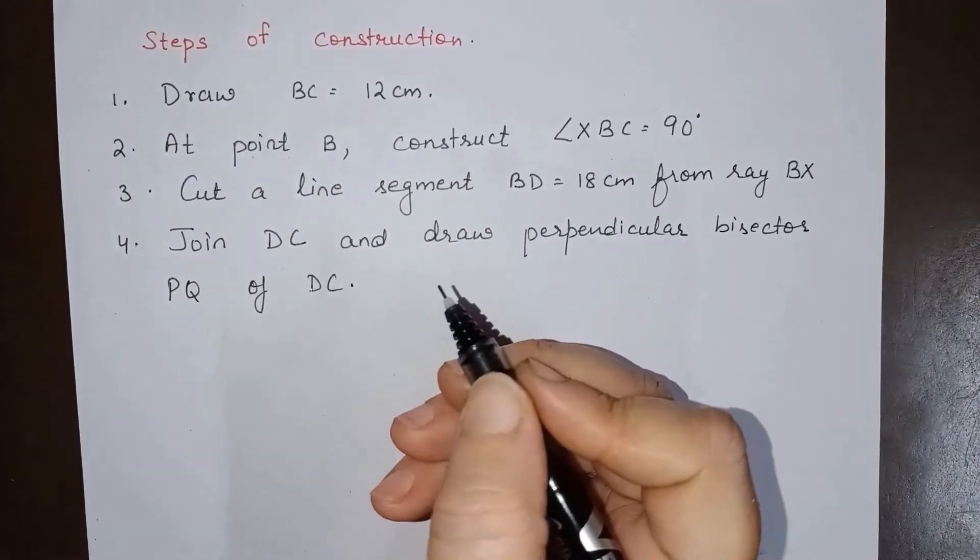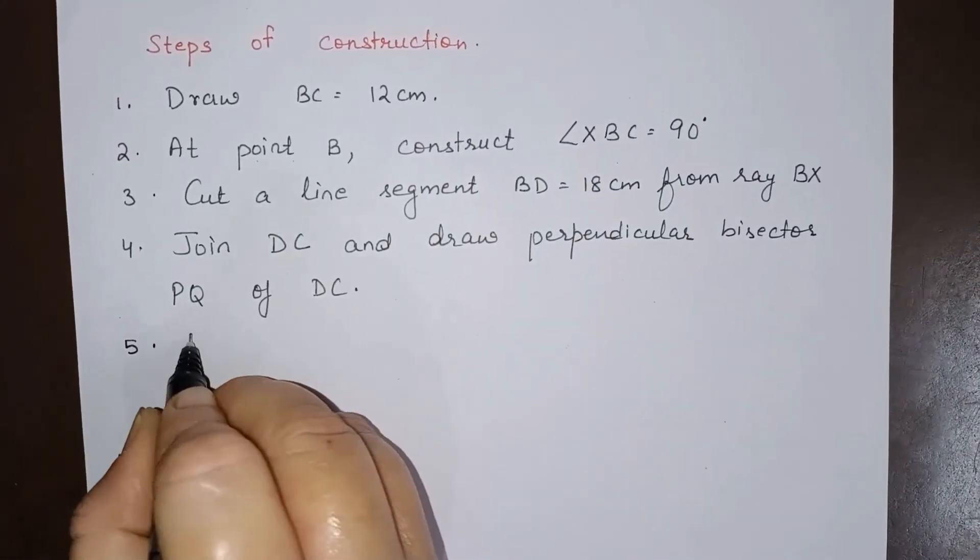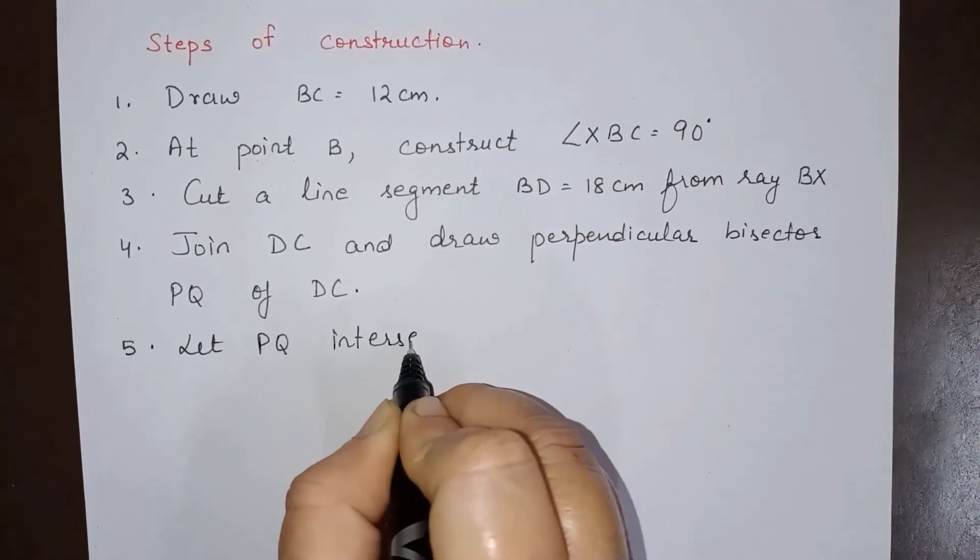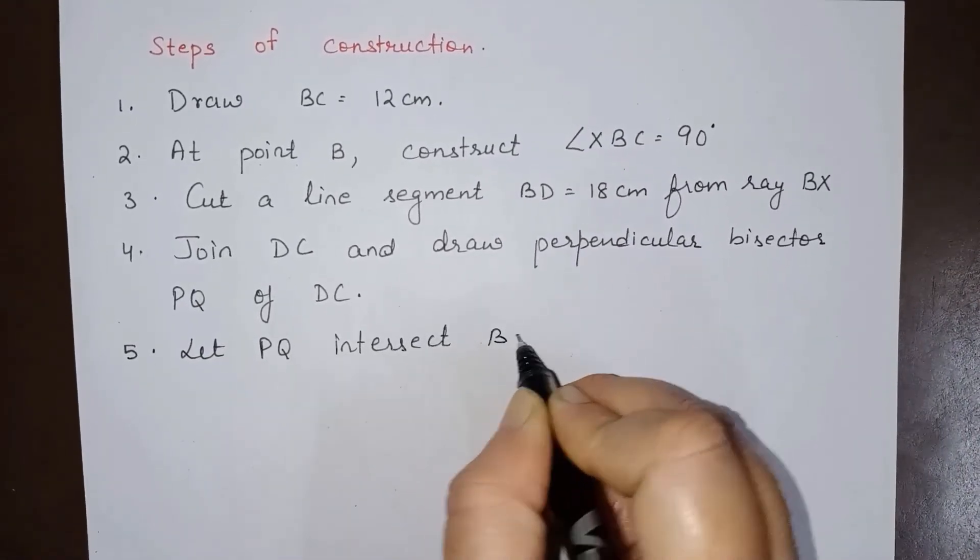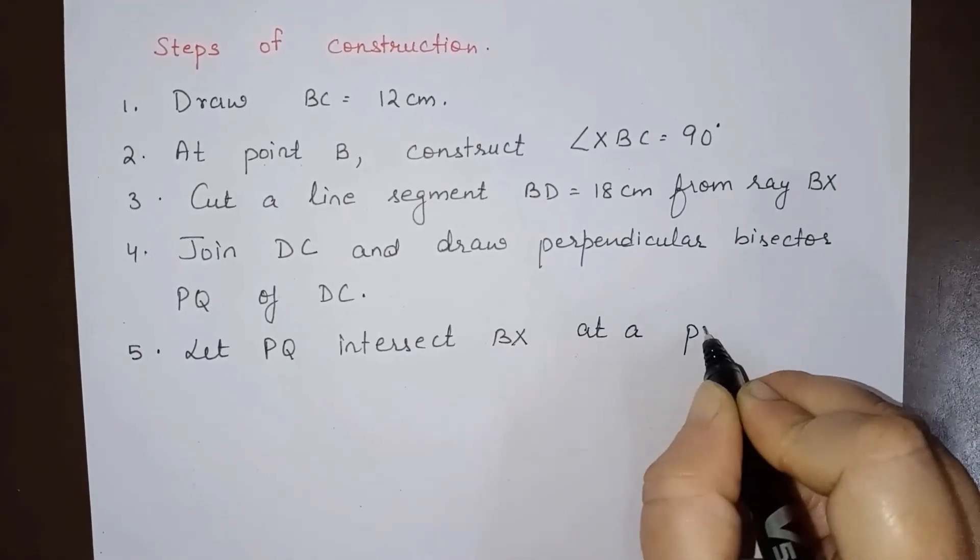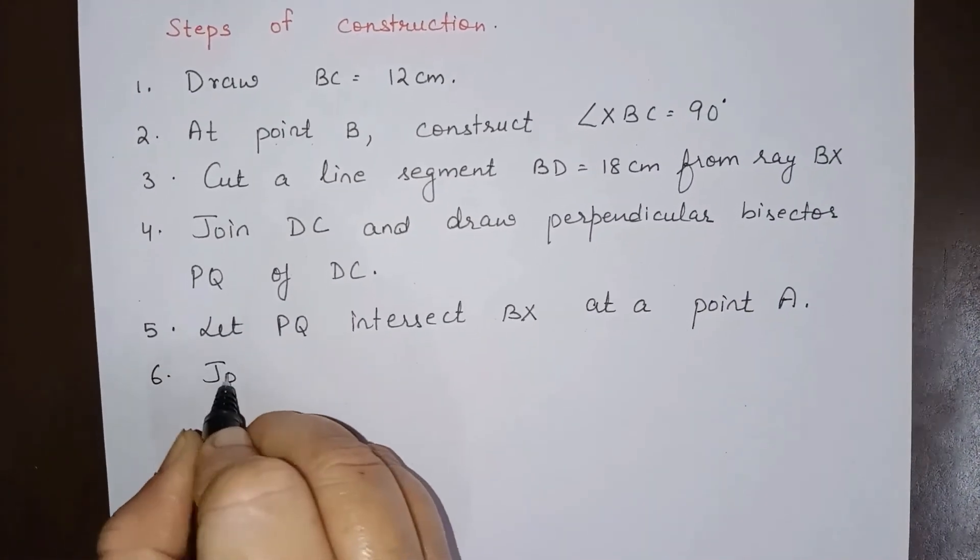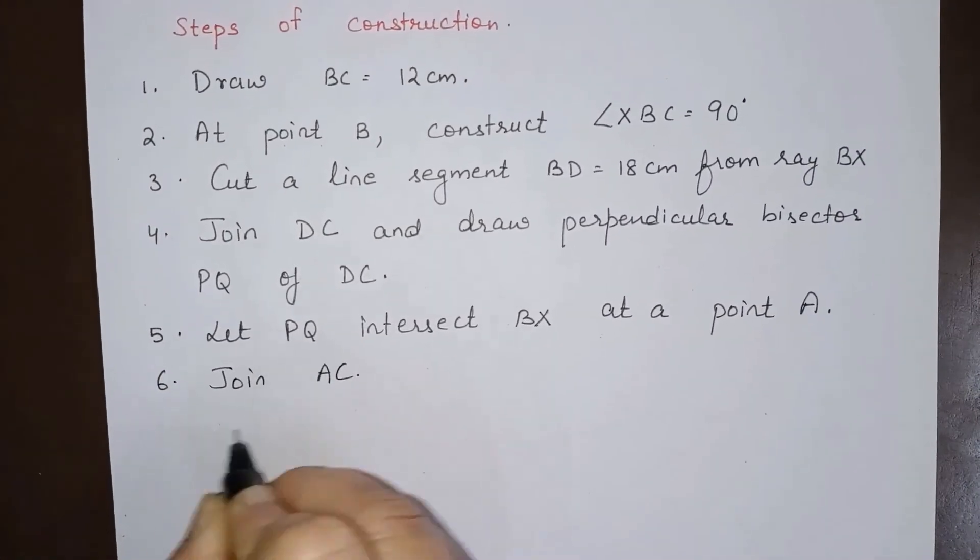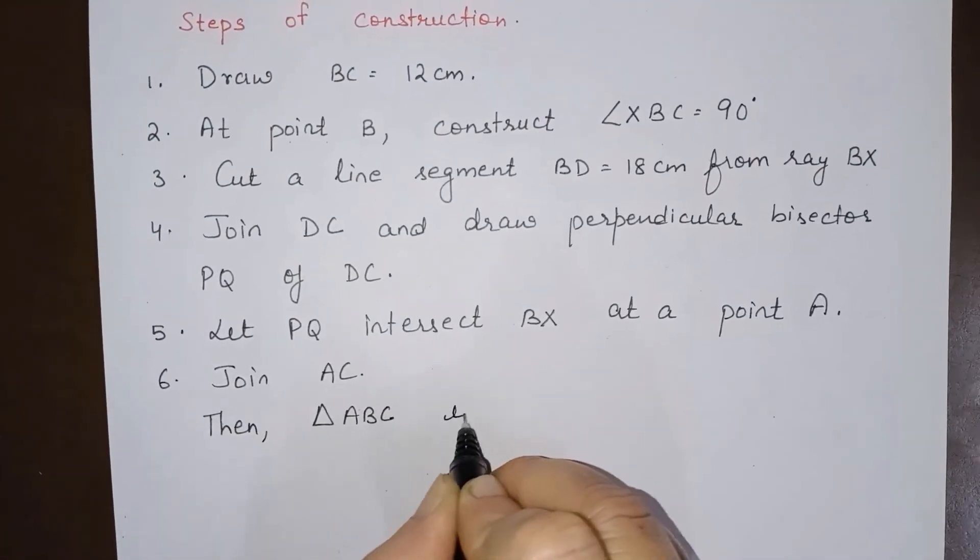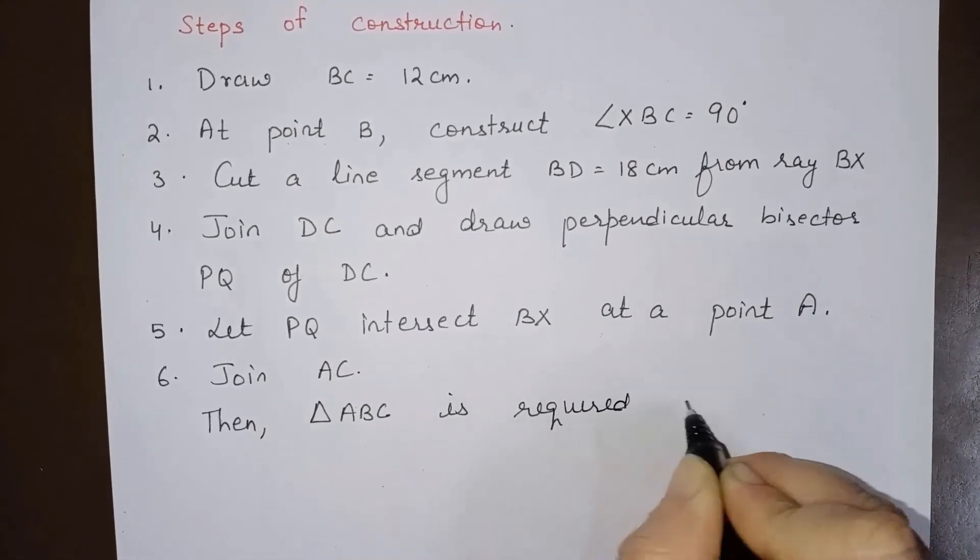That is, we have drawn perpendicular bisector of DC. Now the next point will be, let PQ intersect BD or BX at a point A. Join AC. Then triangle ABC is the required triangle.